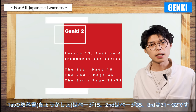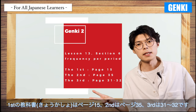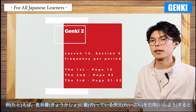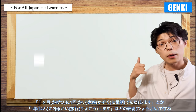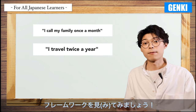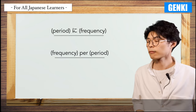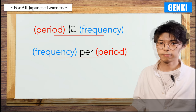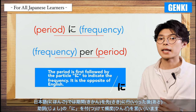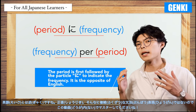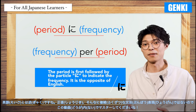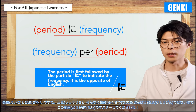The first textbook is page 15, the second is page 35, and the third is pages 31 to 32. For example, quoting from the textbook: I call my family once a month, or I travel twice a year. Let's look at the framework — Period, ni, frequency. In Japanese, the period comes first, followed by ni, then the frequency. It is the opposite of English. Honestly, it's not that complicated a grammatical expression, so please master it with this lesson.